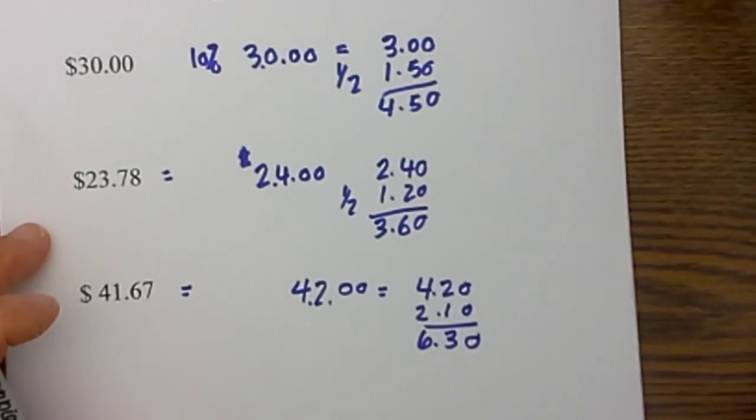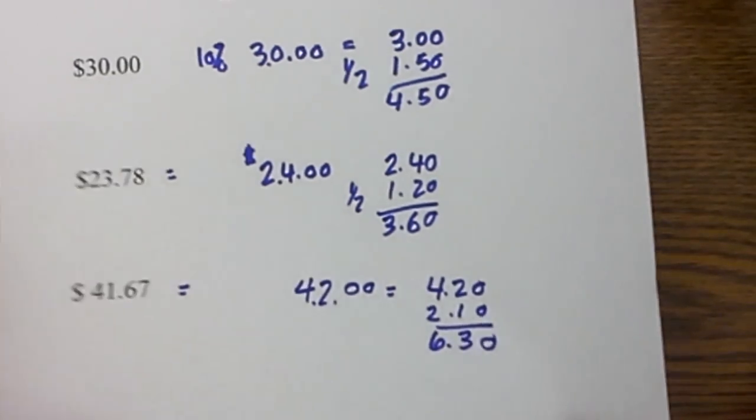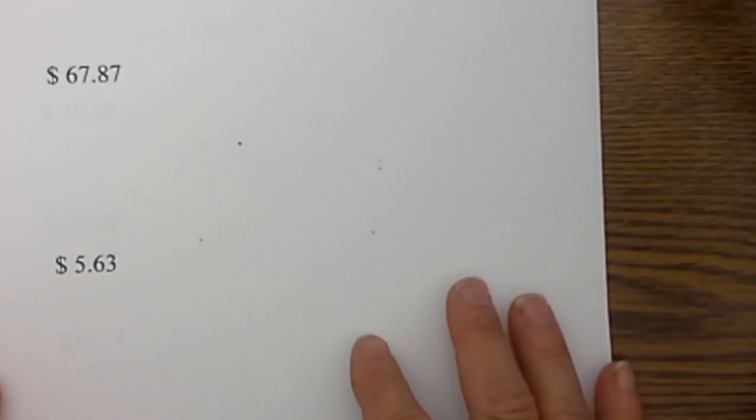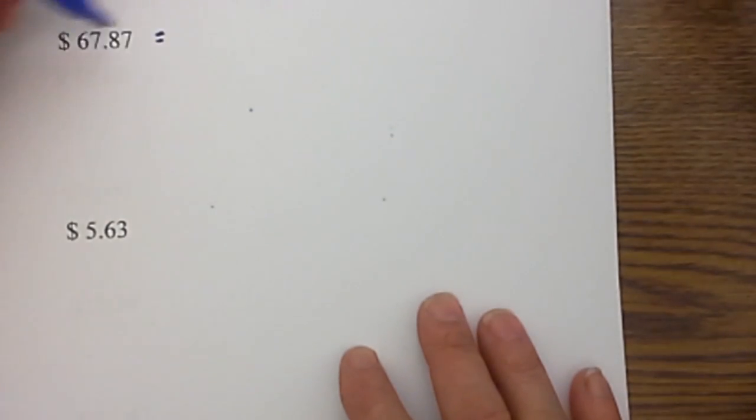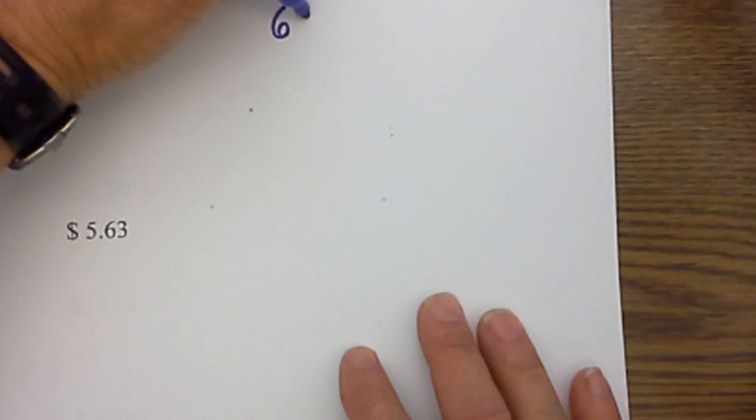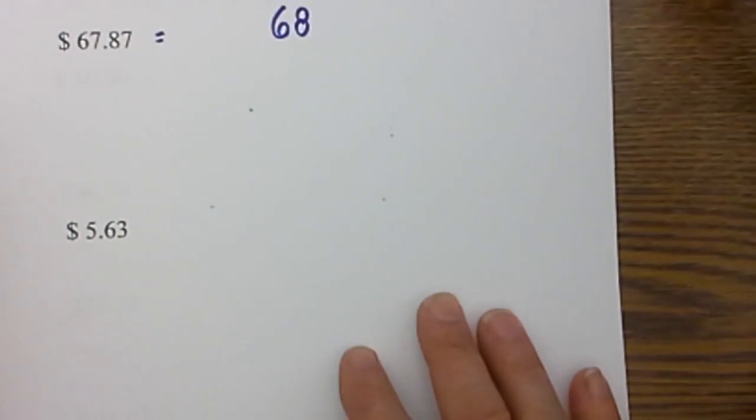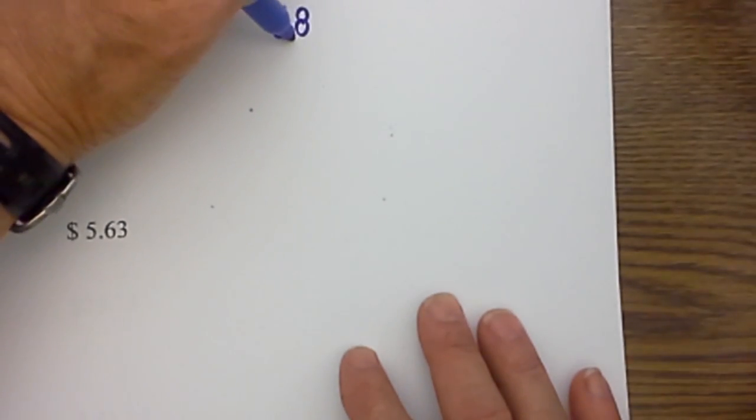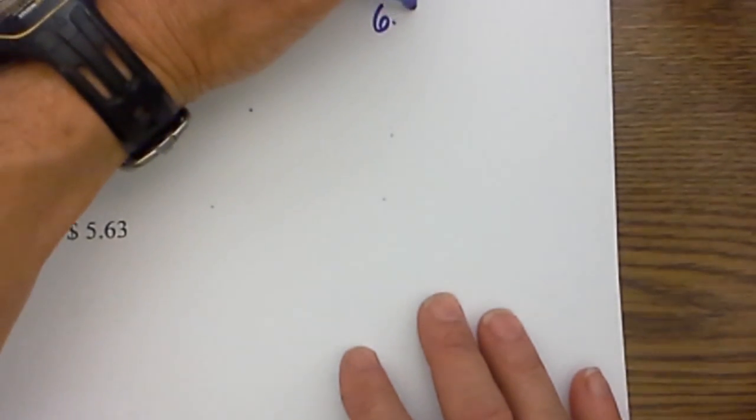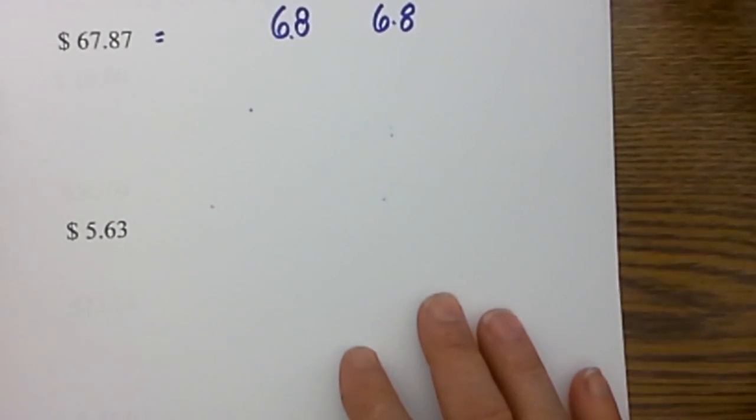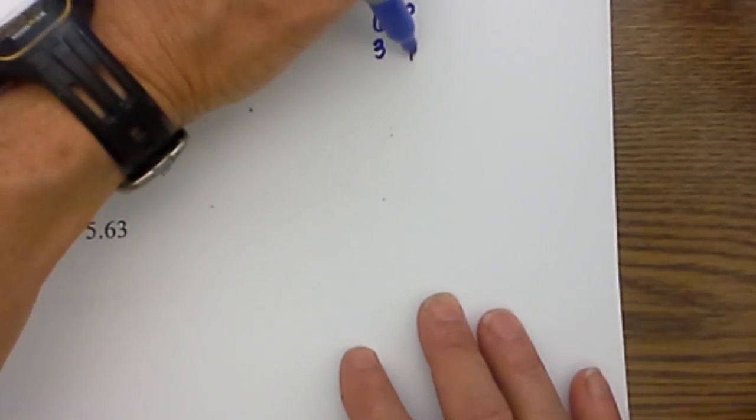I will show two more examples, I think you are getting it by now on figuring out a 15% tip. $67.87 I will round it to $68.00. I then move the decimal place to the left which becomes $6.80. I take one half of that which is $3.40.